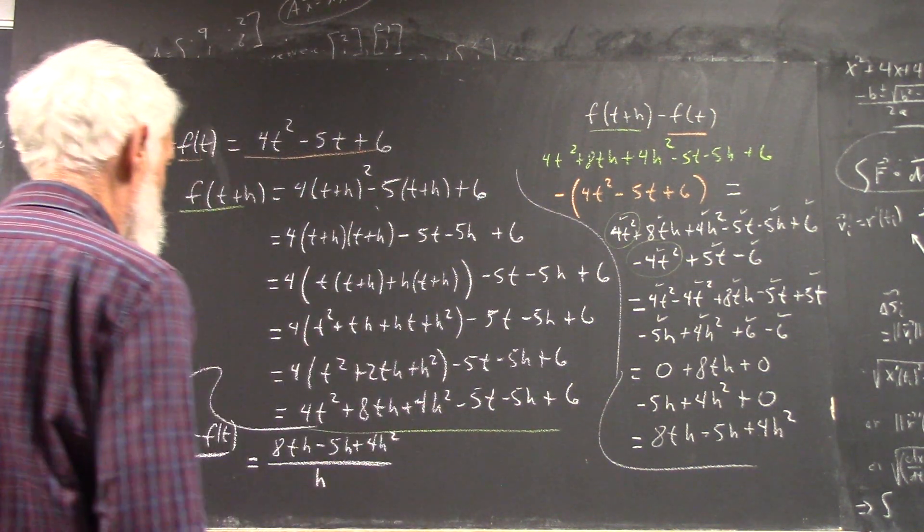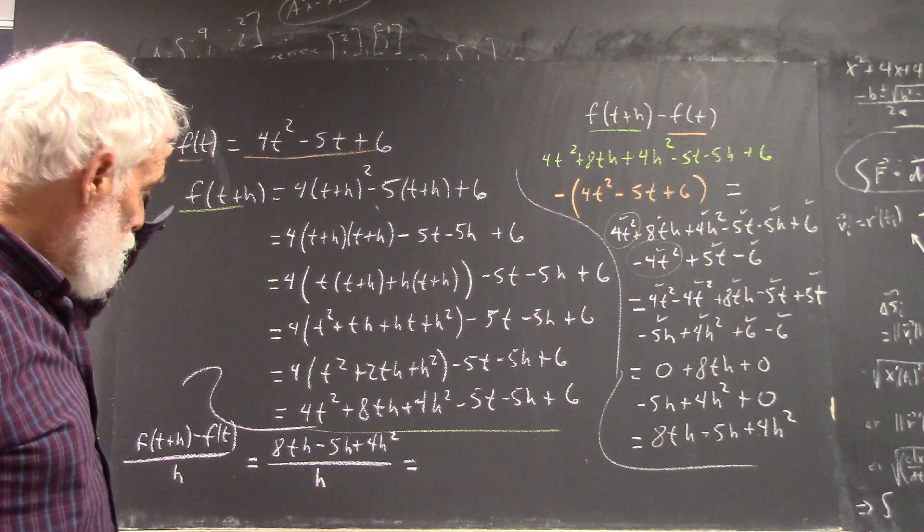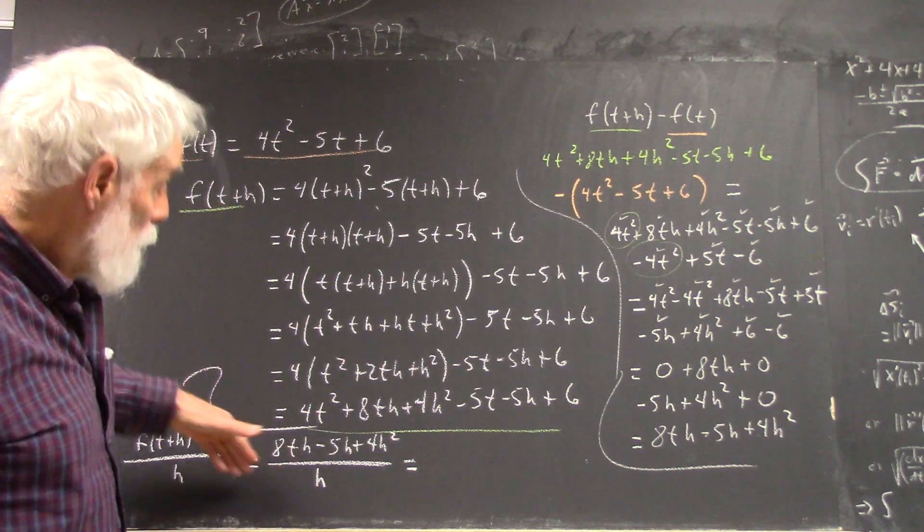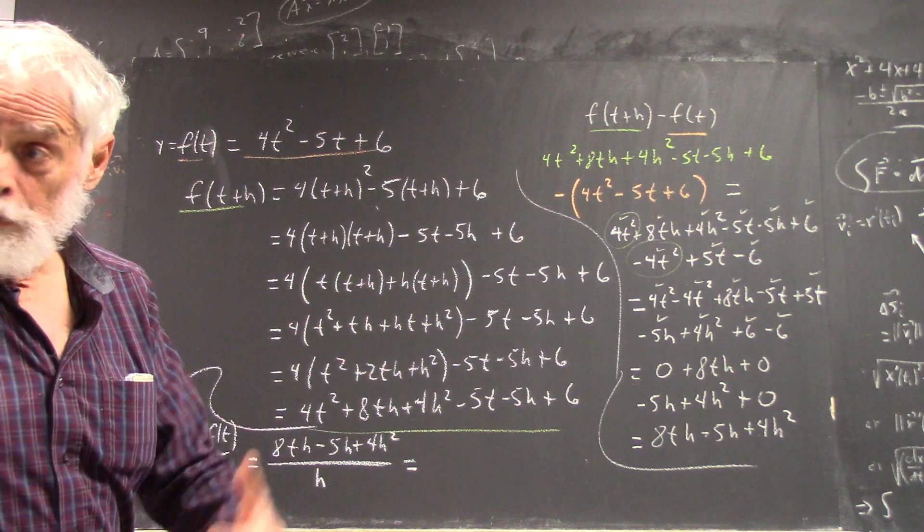There were some mistakes. Okay, so this equals, okay, now I could write this as 1 over h multiplied by this whole thing, right? So I'm actually going to do that.